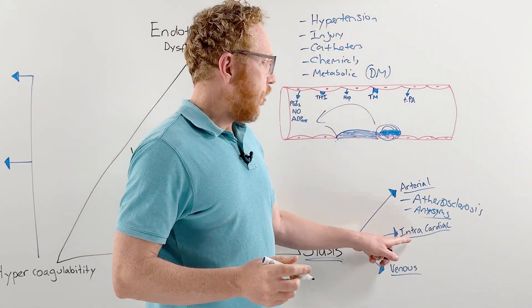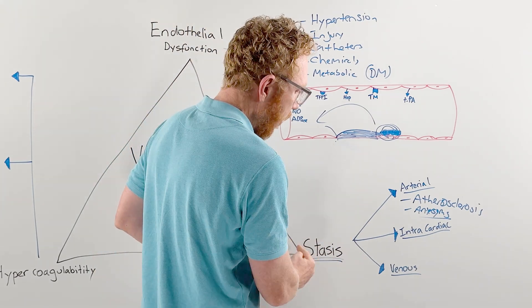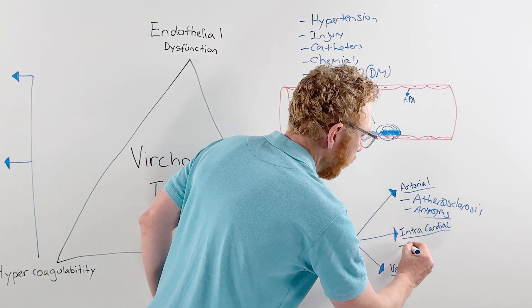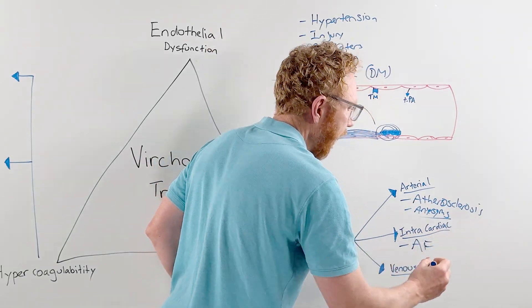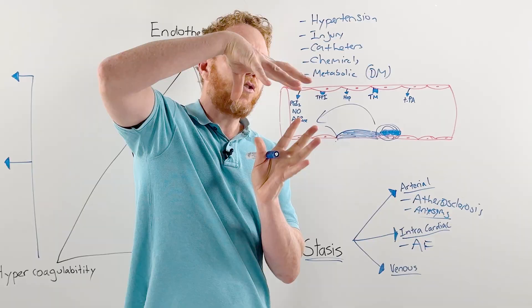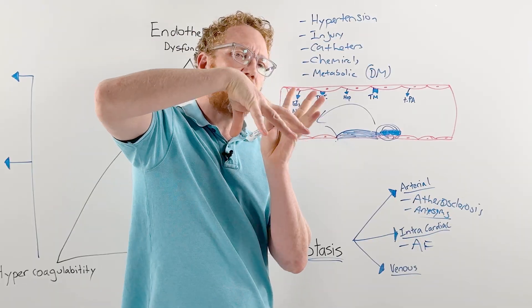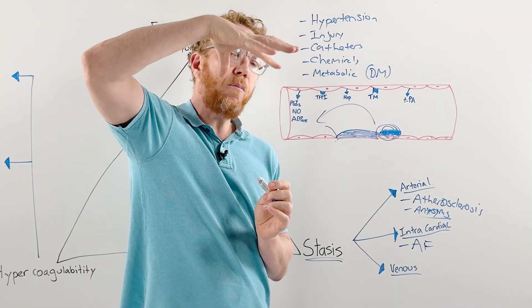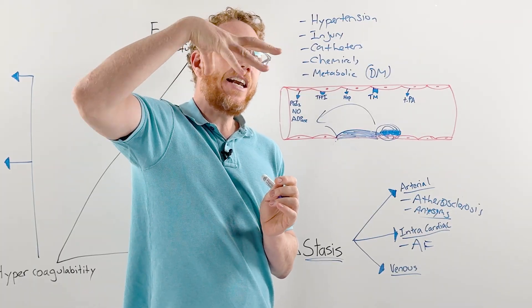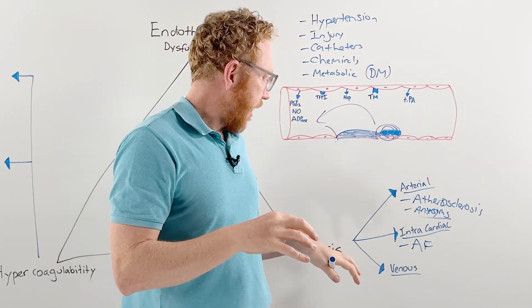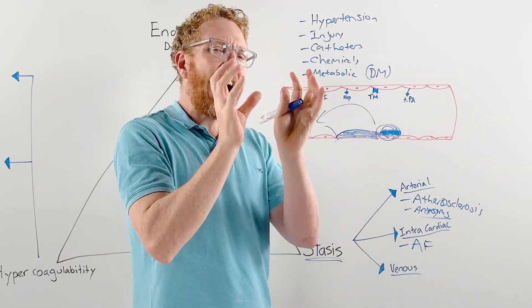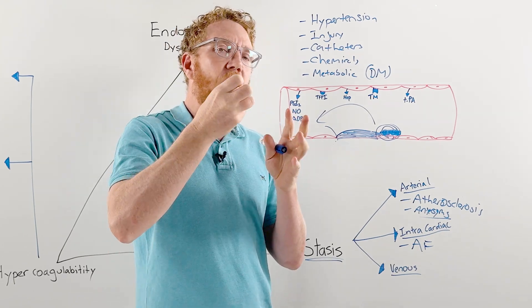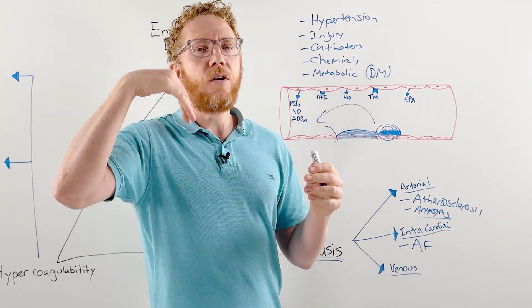In terms of intracardiac stasis, meaning in the heart itself, how would blood slow down or stasis form? One notable cause is atrial fibrillation or AF. The heart would beat atria, ventricles, atria, ventricles. When the atria beat, they want to get rid of all blood in that contraction. But if it's fibrillating, it's not getting rid of blood very well. Blood starts to stagnate in that chamber which is not contracting well, and it can coalesce and form a clot.